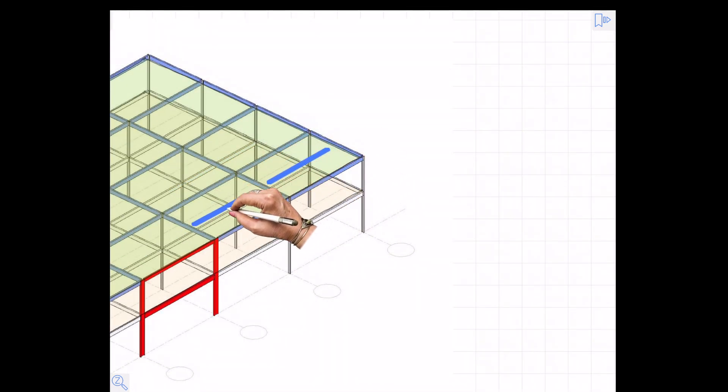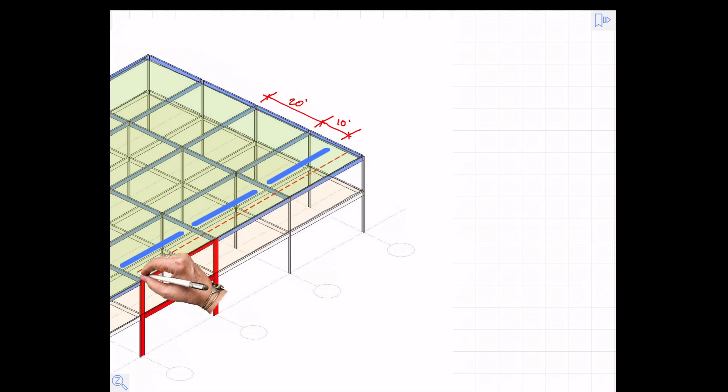There are some beams that are not shown here for clarity. Those are 10 feet on center. So here's our 20-foot bay and then the tributary width to each of those is going to be 10 feet, leaving us a five-foot tributary width on the edge beams and that's going to provide some additional load onto our rigid frame.